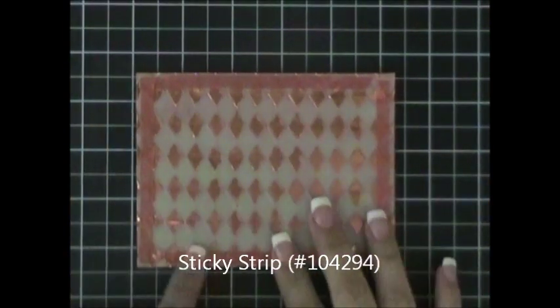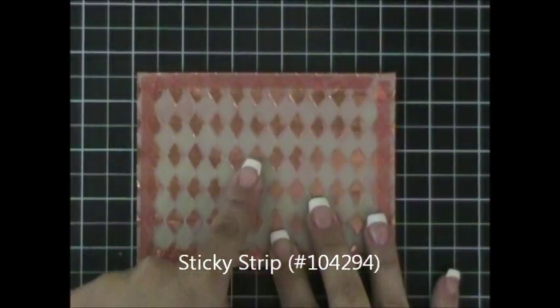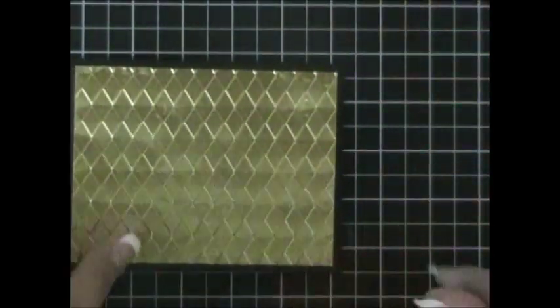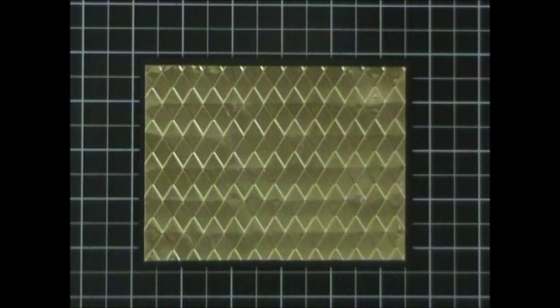Once you have attached the sticky strip to the four walls of your metal embossed piece, simply what you are going to do is you are going to peel it off and you are going to attach it to your card. Now we are ready to start assembling the card.